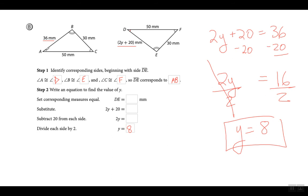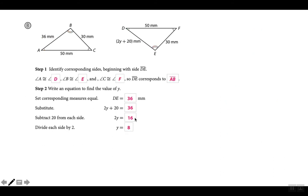Notice when filling this out: segment DE — D is the angle with one tick mark, E is the angle with three tick marks. So over here I didn't write BA, I wrote AB, to continue the same pattern — starting with the angle with one tick mark (A) going to the angle with three tick marks (B). If you write BA it might be marked wrong, so write AB. Down here: write an equation to find the value of y. DE = AB, so 2y + 20 = 36, then 2y = 16, so y = 8.